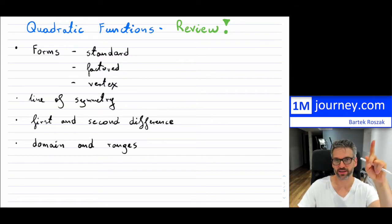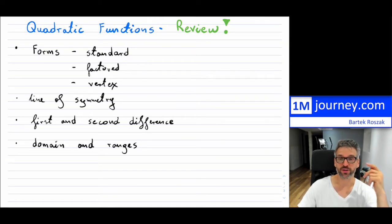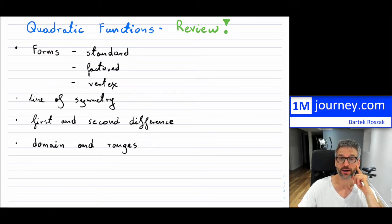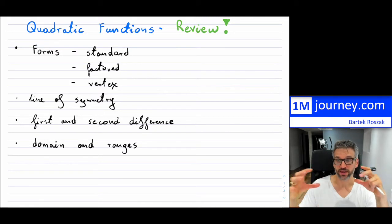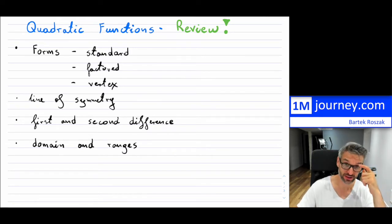If you've forgotten about first and second differences from lines, I'll put up a link. And finally, I'll concentrate on domains and ranges. For quadratics, domains and ranges are much simpler than most functions we run into. Quadratics in general are just polynomials. For the domain and ranges, what's nice is that we don't really have any restrictions on the domain, but we do have some restrictions on the ranges, and we'll go through that with an example.